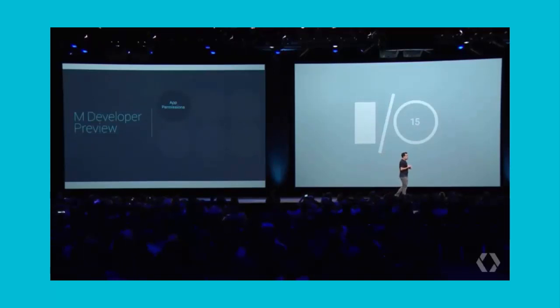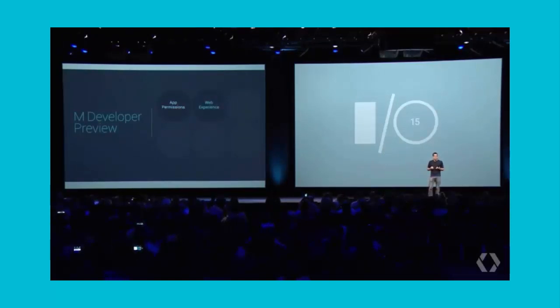Next up, let me highlight one of the ways that we're improving the web experience on mobile. One of the interesting trends we're observing on mobile today is around how web content is being consumed. App developers increasingly care about the experience their users get when they tap on a web link from within their app. Today you've got two choices: you either make a big context switch out to the browser, or you build your own experience by embedding a web view within your app.